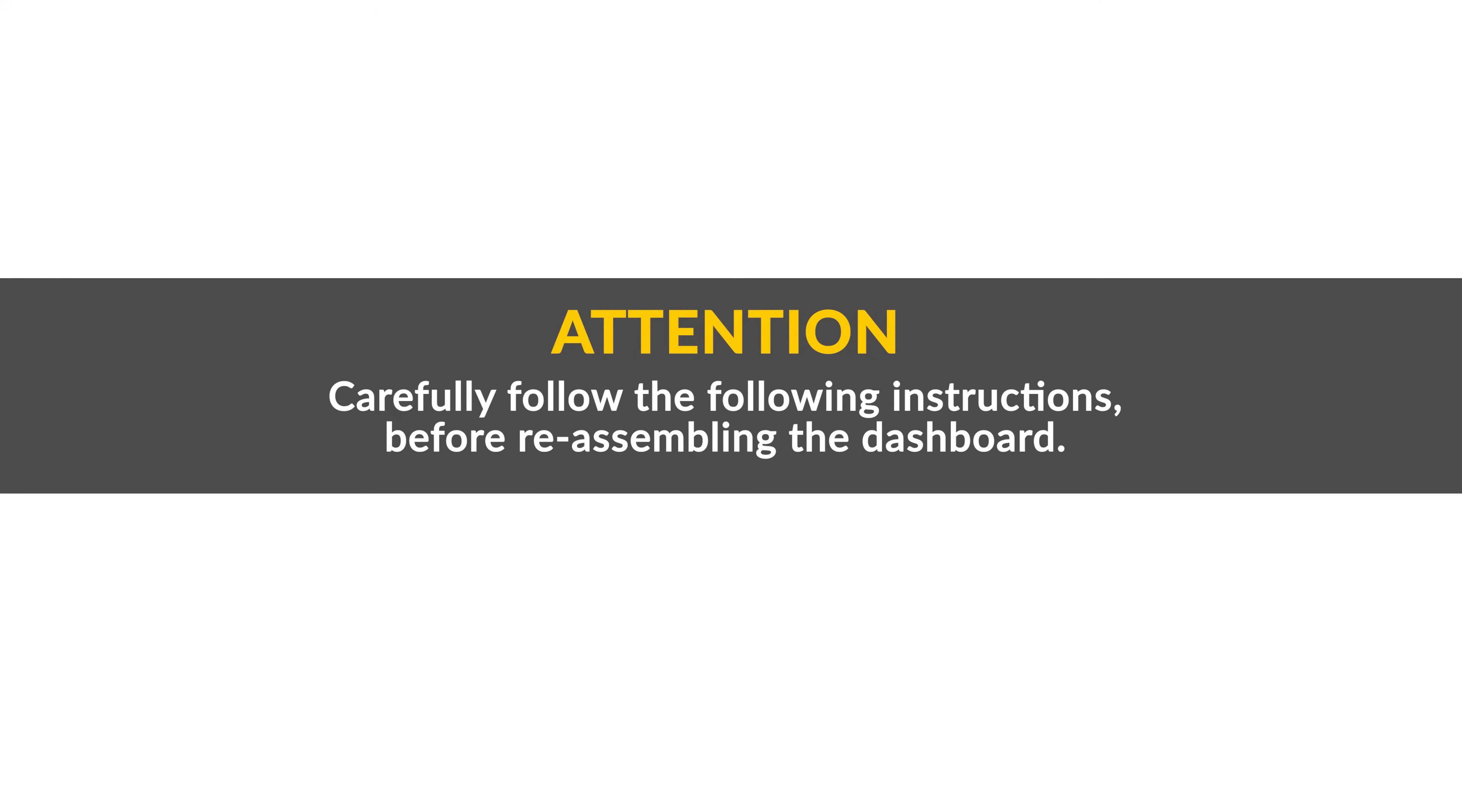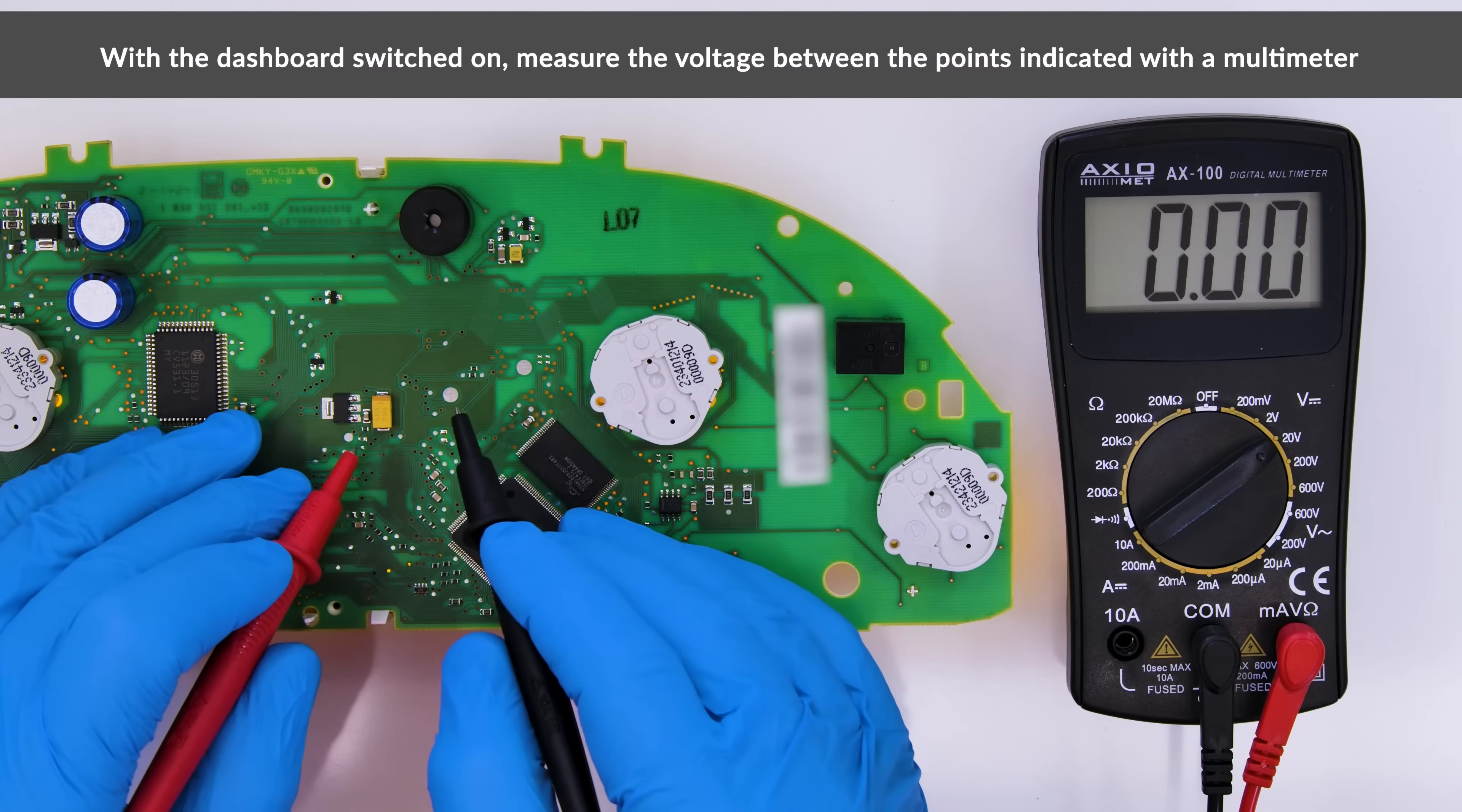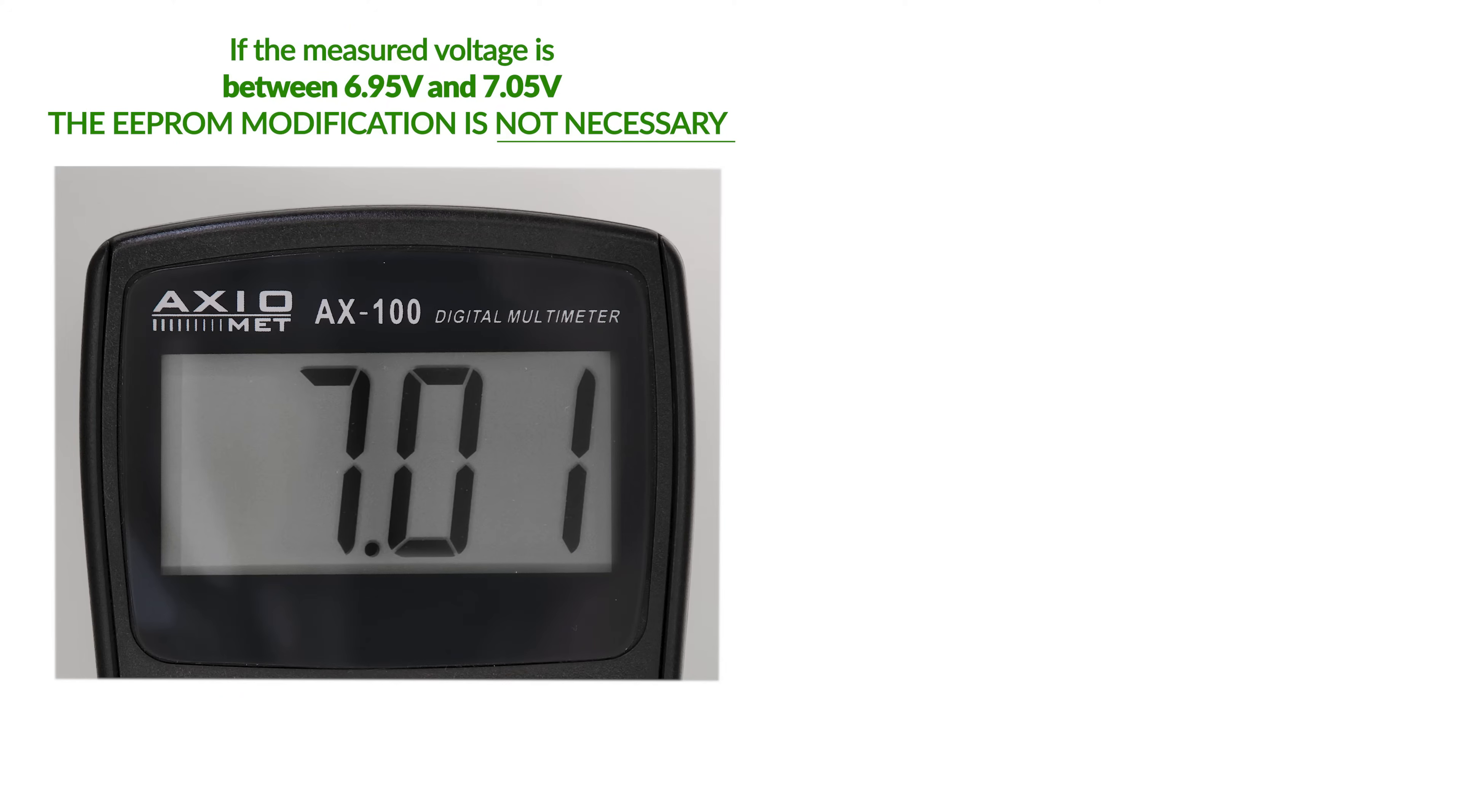Carefully follow the following instructions before reassembling the dashboard. Switch on the panel. With a multimeter, measure the voltage between the points indicated and take note of it. If the voltage measured is between 6.95 and 7.05 volts, the problem is solved.